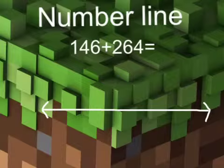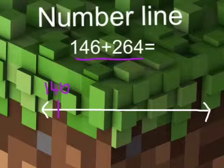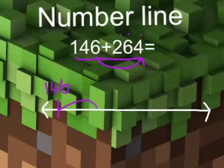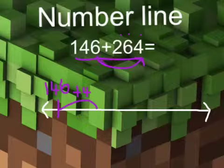The next method for adding numbers together that I want to show you is using a number line. Now my example has the number 146 plus 264. On my number line, I'm going to write the number 146. Now the first jump that I'm going to do on my number line is for the ones column. I'm going to add on this 4 of my 264. So I'm going to add 4 onto 146. So I'll just do a little jump of plus 4. Now I can see that 6 and 4 is a rainbow fact, and 6 and 4 make 10. So I'm going to land on the next 10, which is 150.